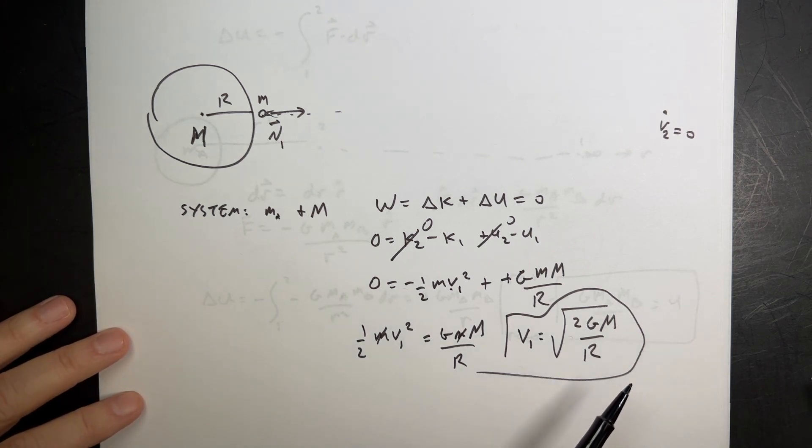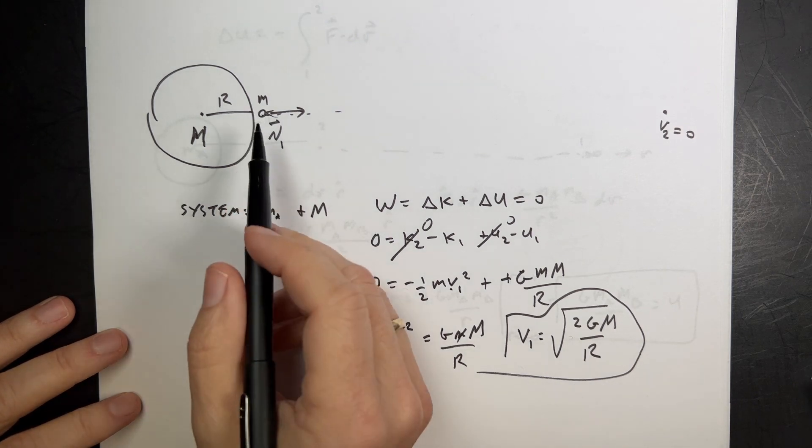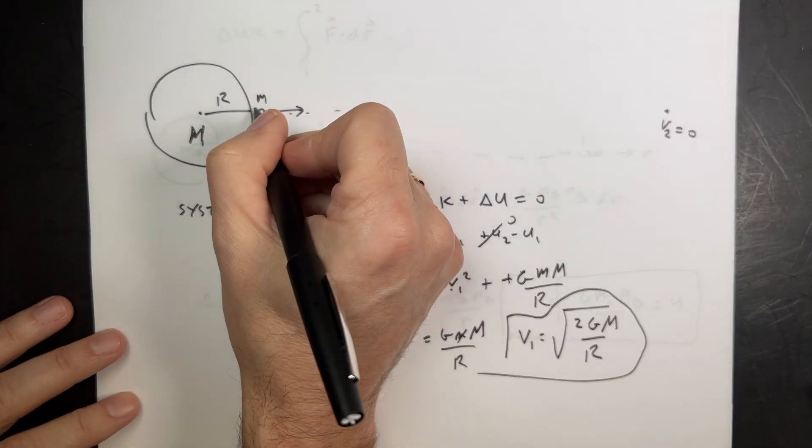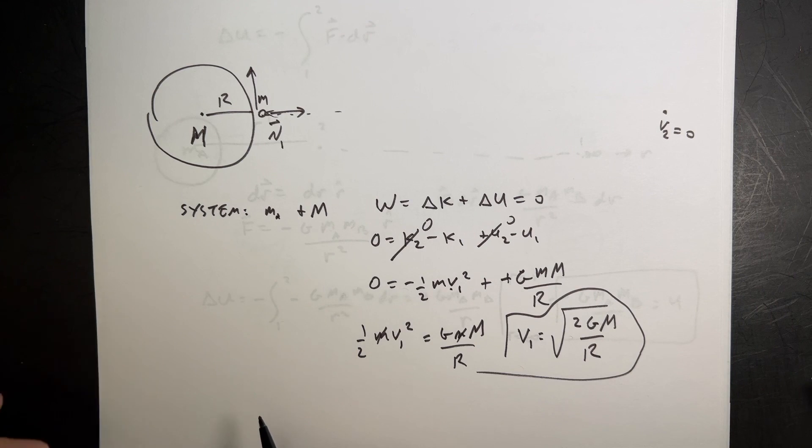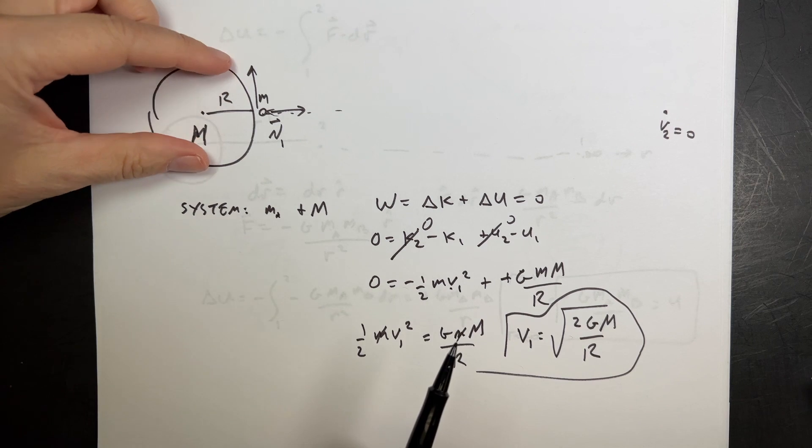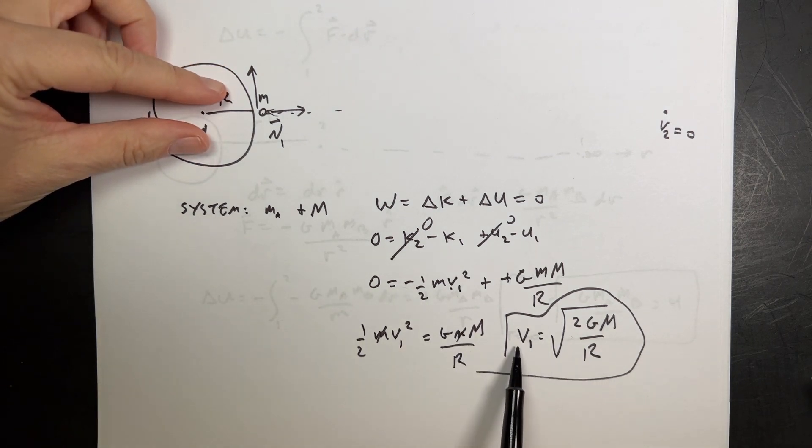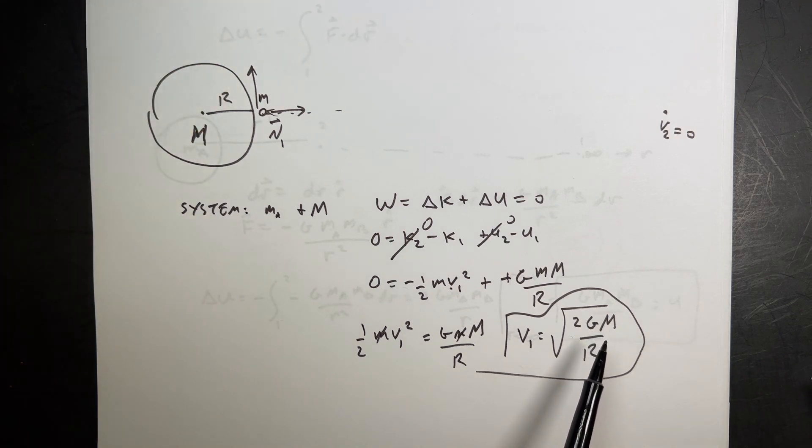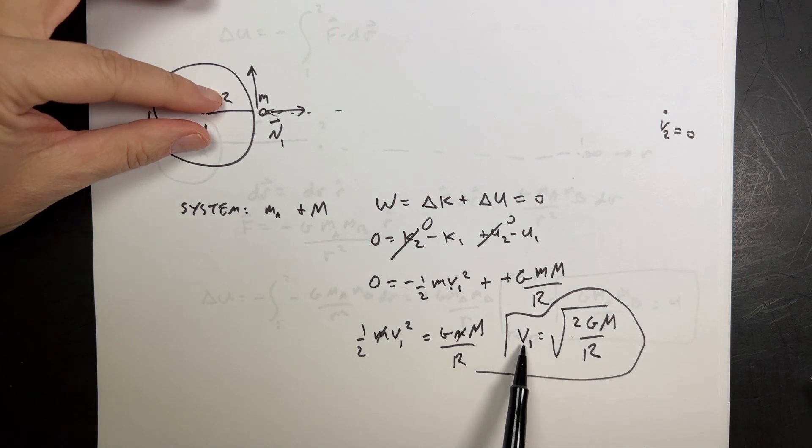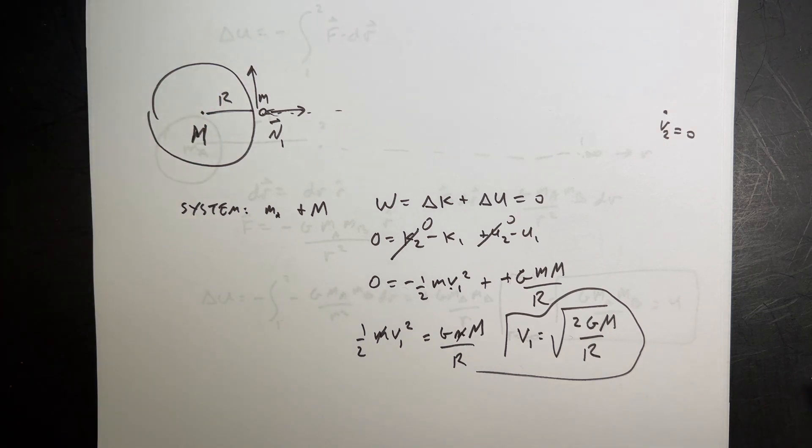So we get 0 equals minus 1/2 mv1 squared minus U1, which is minus G big M little m over r. Solving for v1, I get v1 equals the square root of 2G big M over r. This is the escape velocity. Notice it doesn't matter what direction you're going because this is a scalar equation. You can use this to find out that if you get the radius small enough, keeping the mass constant, you can get an escape velocity equal to the speed of light. That's how you find the maximum size of a black hole where the escape velocity is greater than the speed of light.